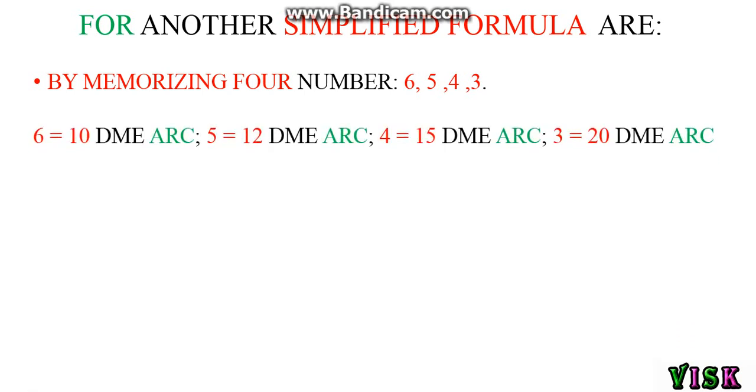For another simplified formula, just remember four numbers: 6, 5, 4, 3. Number 6 refers to 10 DME, number 5 refers to 12 DME, number 4 refers to 15 DME, and number 3 refers to 20 DME. For example number one: 40 degrees to go on 10 DME equals 40 divided by 6, because 6 refers to 10, equals 6.6 nautical miles to go.